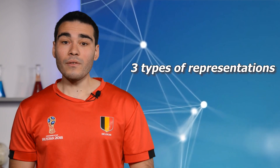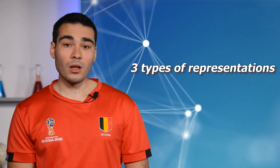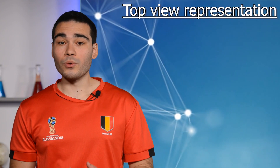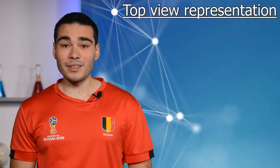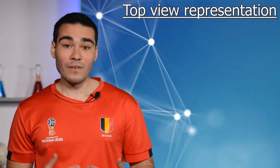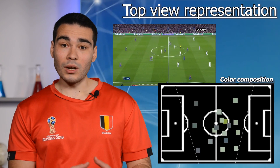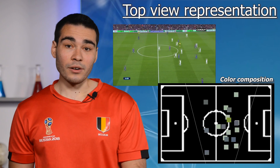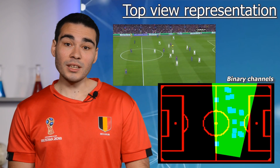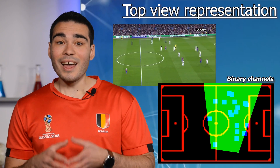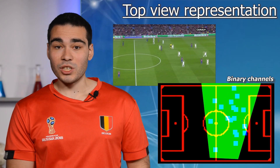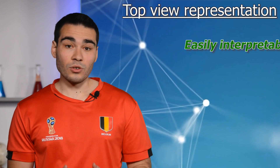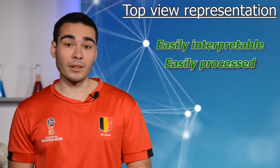To further investigate the use of calibration and player localization, we release various easy-to-use representations of our extracted information. The first and most natural one is a top-view representation of the field, for which we provide two flavors. First, a color composition where we plot the lines and superimpose the field seen by the camera and the players with their RGB color. Second, a binary channel representation, where lines, the field seen, and the players are encoded in separate channels. Such views are easily interpretable for humans and easily processed by a neural network.